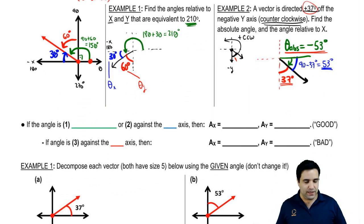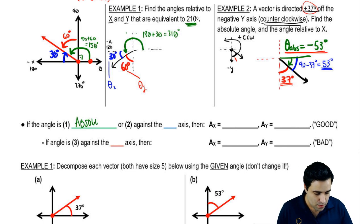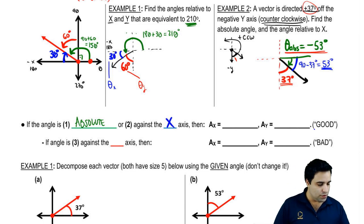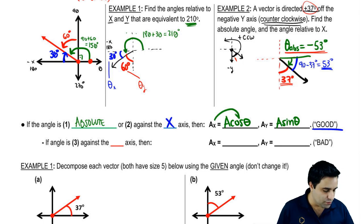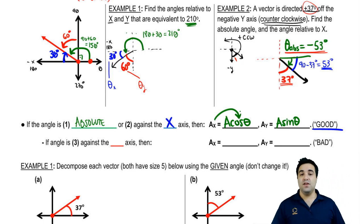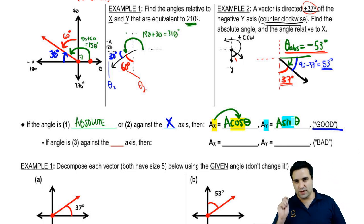The reason we're talking about this is because you need to know what kind of angles you can use and which are better. If the angle is absolute or against the x-axis — those are the two good angles — then Ax equals A cosine of theta, and Ay equals A sine of theta. X goes with cosine, and y goes with sine. We only have to remember one of them.